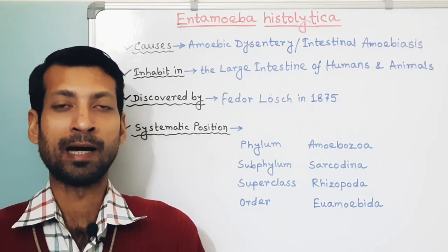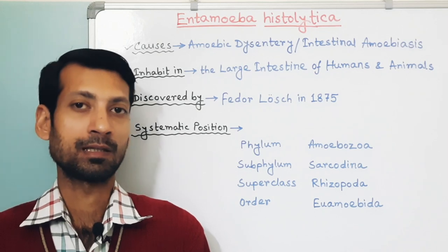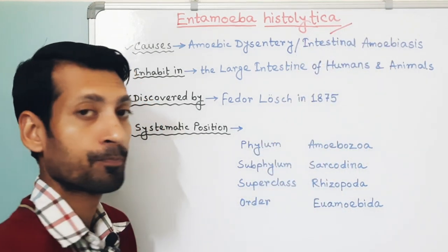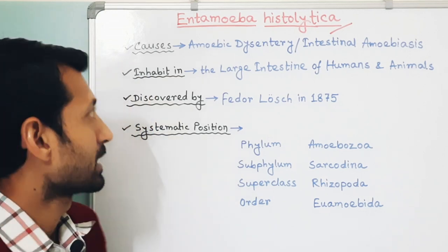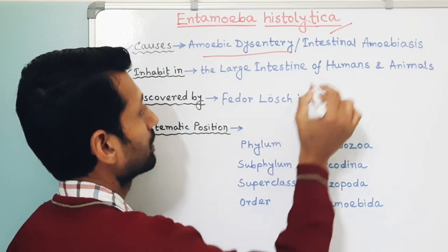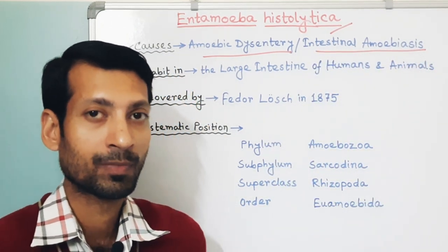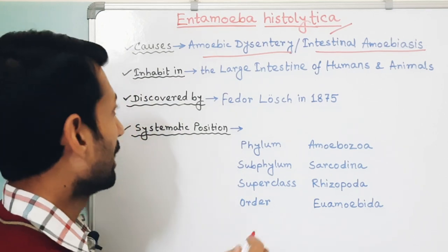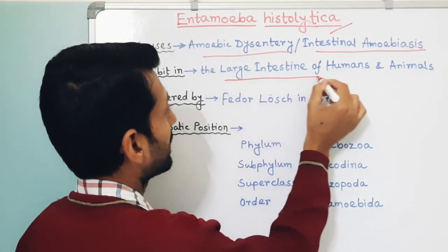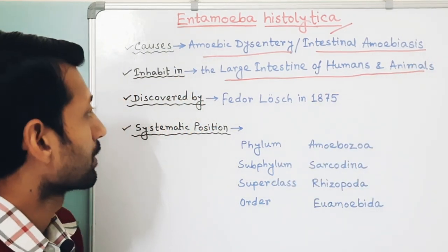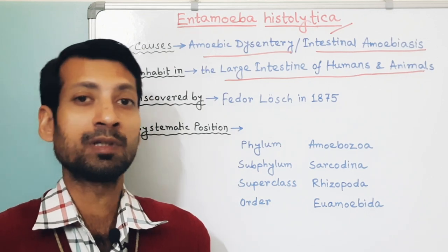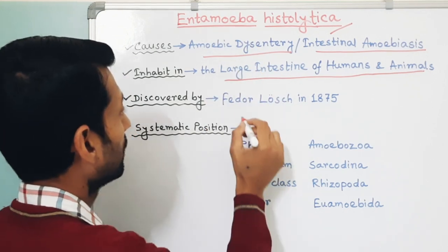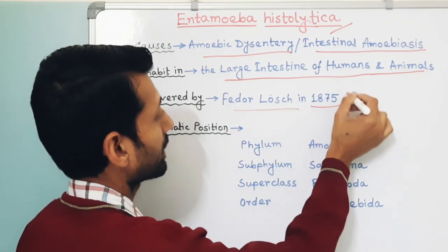Hello viewers, welcome to my channel Biology Notes. Today I am going to discuss the habitat, epidemiology and morphology of Entamoeba histolytica. Entamoeba histolytica causes amoebic dysentery or intestinal amoebiasis. It is an amoeba that inhabits the large intestine of humans and animals, and it is the only pathogenic species among intestinal amoeba. This parasite was discovered by Fidor Lush in 1875.